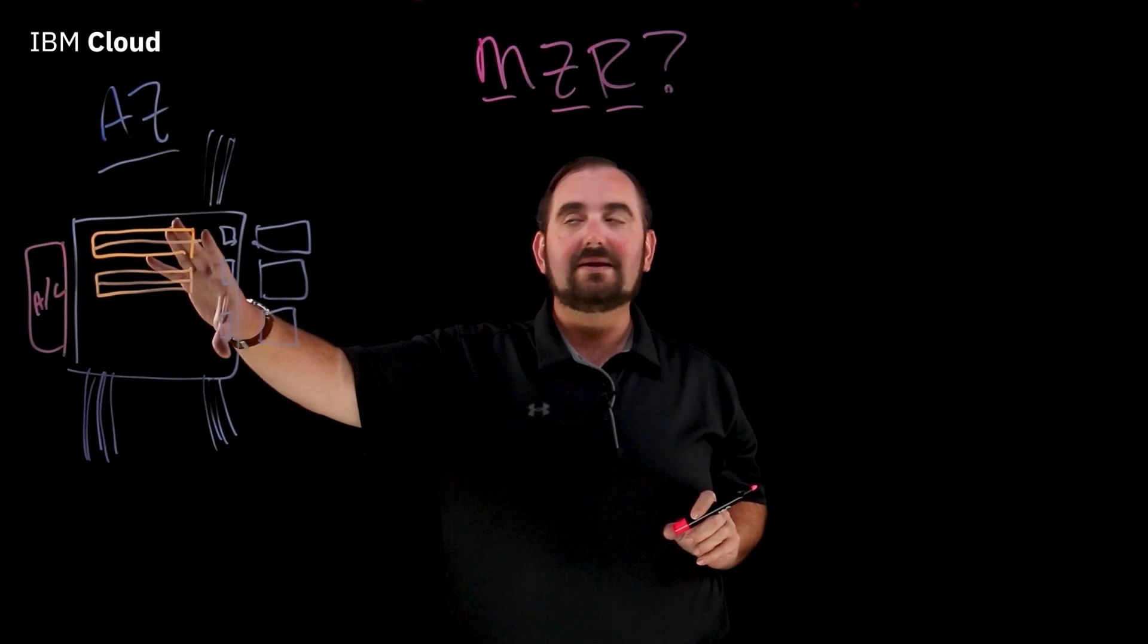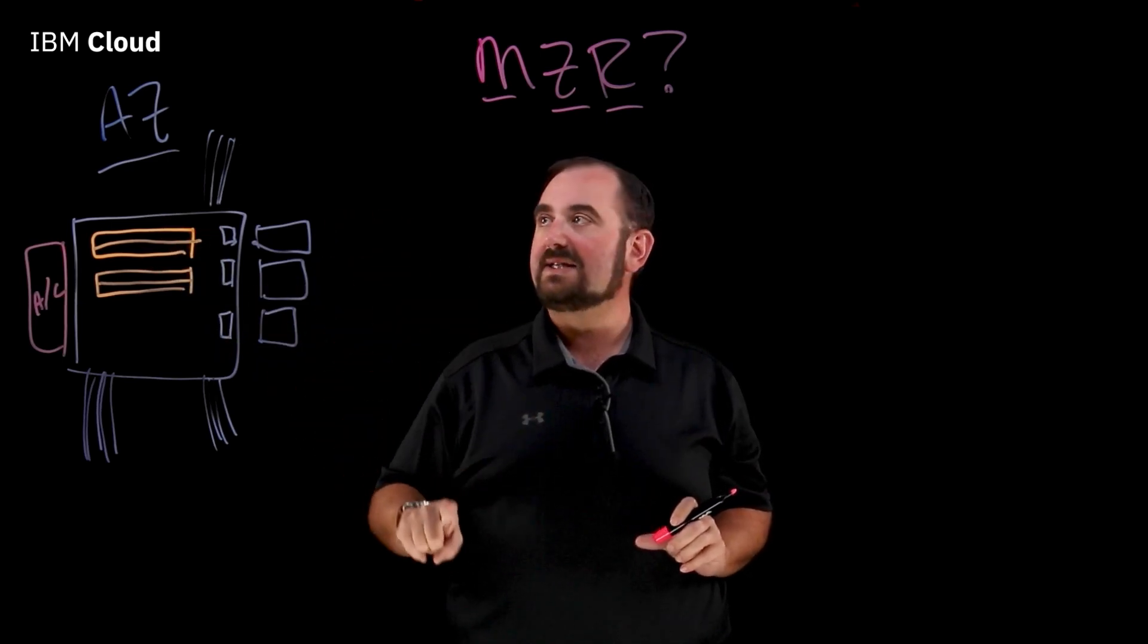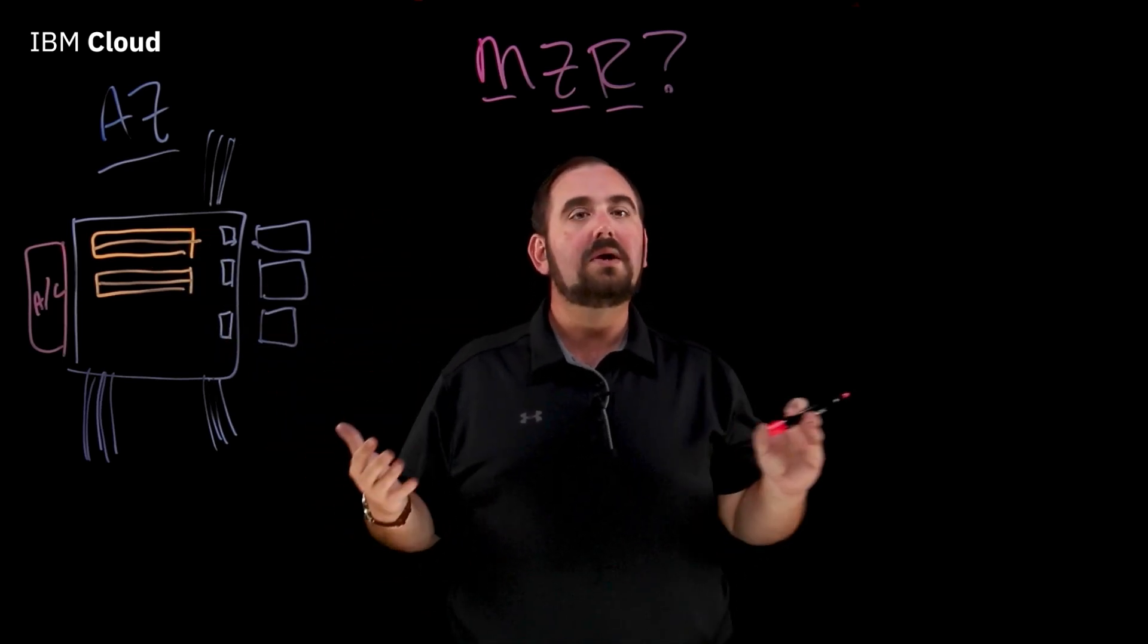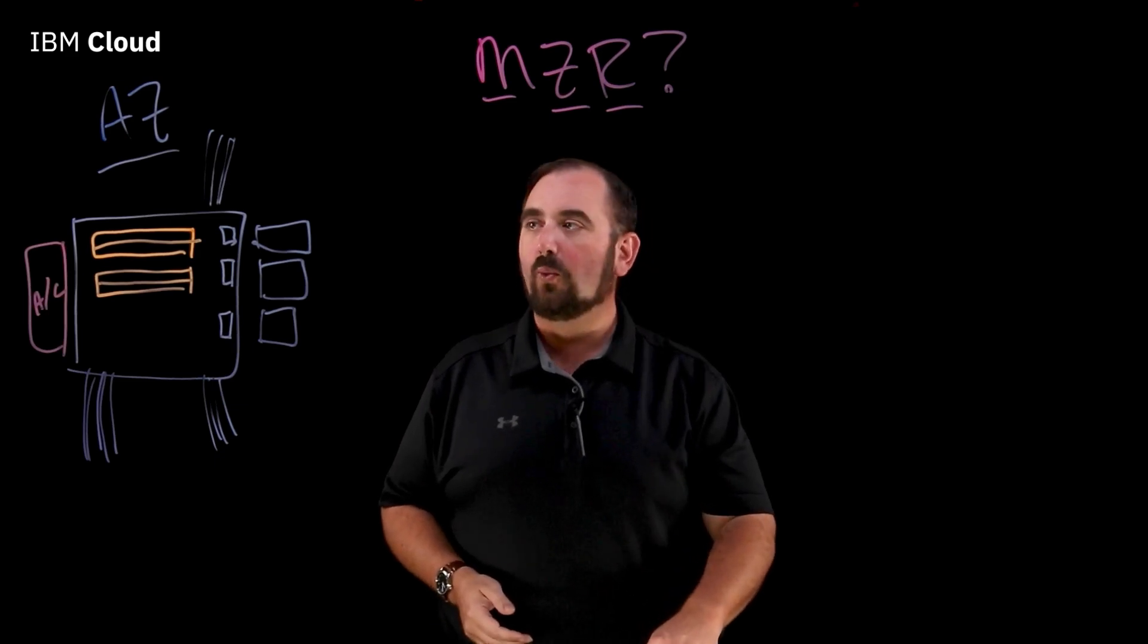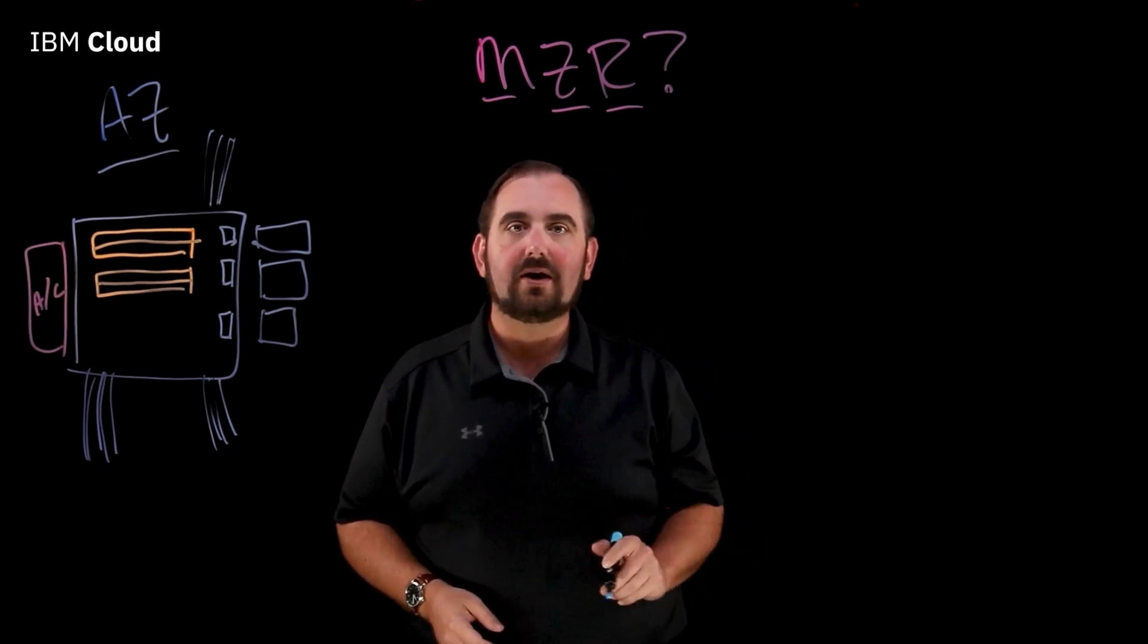And so, this is an availability zone. This is 1 AZ. So, get back to our original question. What is an MZR?